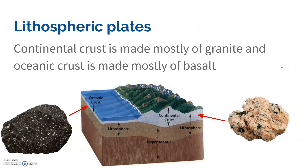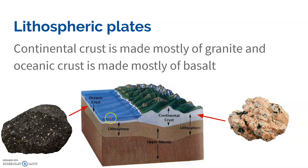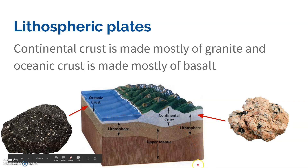There are two different types of crust: continental crust and oceanic crust. Continental crust is much less dense and is made out of granite. Oceanic crust is much more dense and is made out of basalt. The density difference is going to become important, so I hope you were listening.